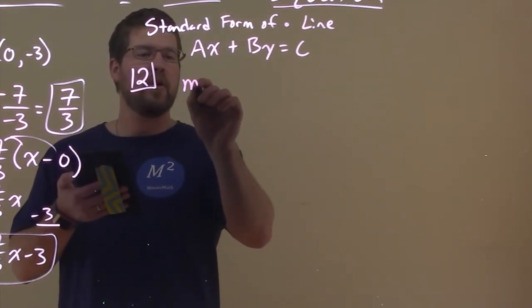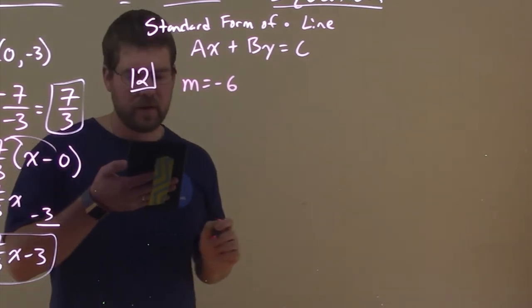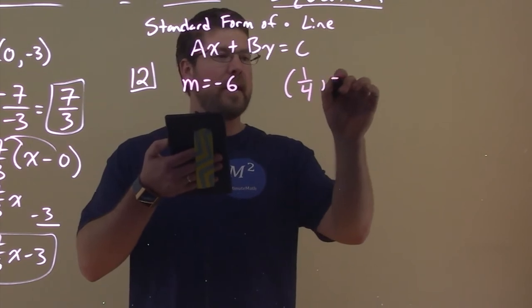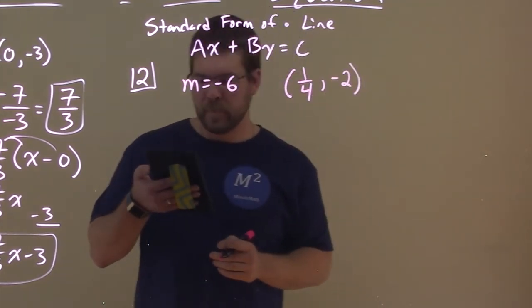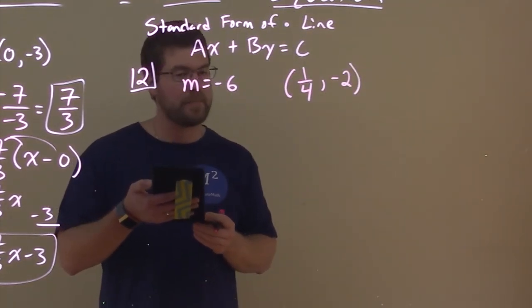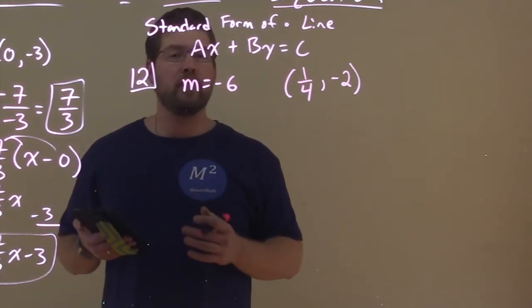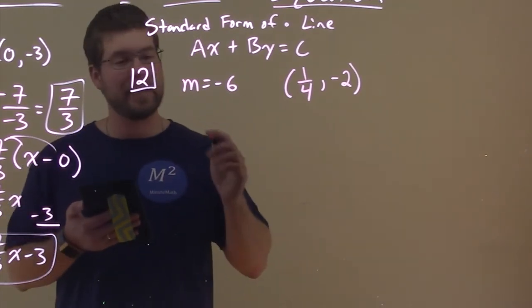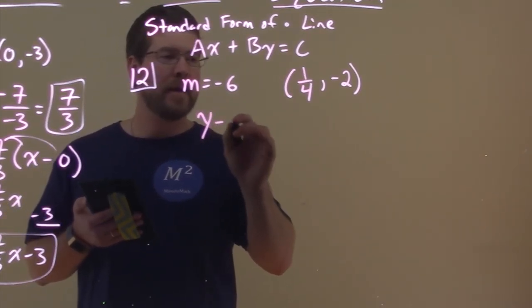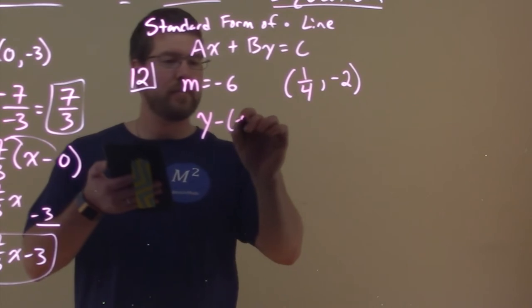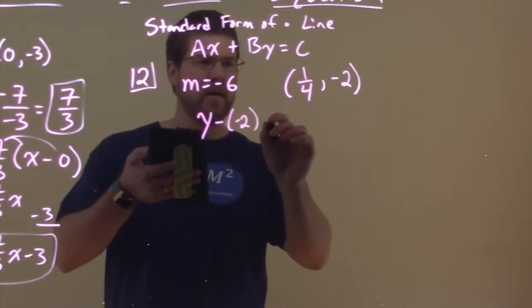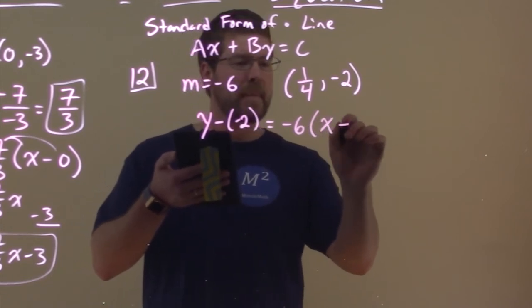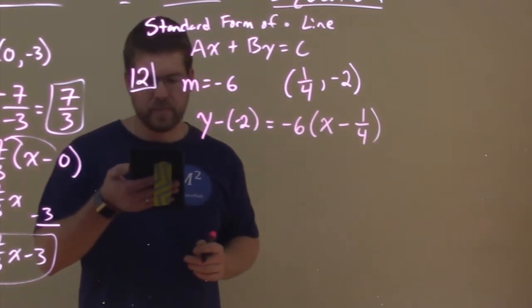We have a line with slope of negative 6, and we know it goes to the point (1/4, -2). And we'll write the equation in standard form. Well, let's use our point-slope formula and see if we can convert to standard form. So point-slope formula, Y minus Y1, which is negative 2 here, is equal to our slope, negative 6 times X minus X1, 1/4.